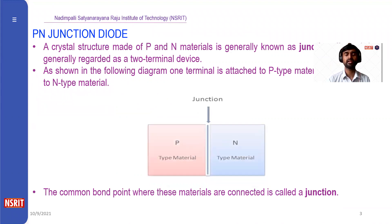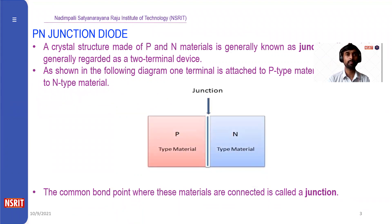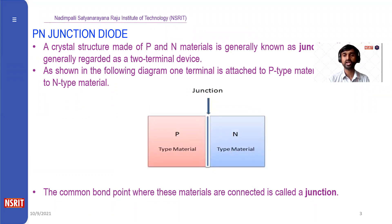In the previous session, we have seen how a p-type material and n-type material is formed. A p-type material is formed by doping a trivalent impurity to a pure semiconductor, and n-type material is formed by doping a pure semiconductor with a pentavalent impurity. When you dope a trivalent impurity, the majority carriers will be holes, and in an n-type material, the majority charge carriers are electrons.